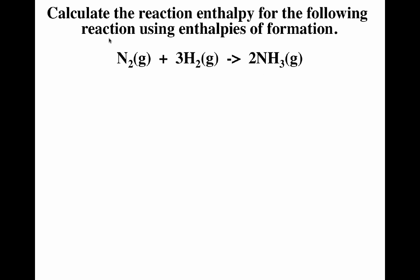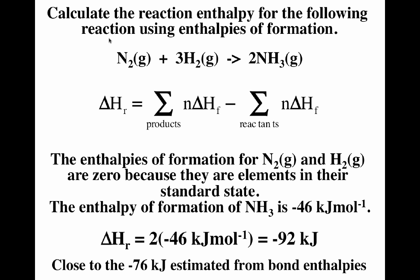We can also calculate the change in enthalpy for this reaction using enthalpies of formation for comparison. Using products minus reactants, nitrogen and hydrogen are both elements in their standard state so they're zero. The enthalpy of formation of ammonia is minus 46, so 2 times minus 46 gives minus 92 kilojoules per mole. Using bond enthalpies we got minus 76, while using enthalpies of formation we got minus 92. Bond enthalpies give you an estimate, but more importantly they give you an idea of which bonds are broken and formed during the reaction.